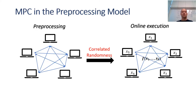In this work, we consider multiparty computation in the preprocessing model. In this model, the execution is divided into two phases: an offline phase, also known as the preprocessing phase, and an online phase. The goal of the offline phase is to produce correlated randomness, and it can be executed even before the inputs are known. In the online execution, the parties use the correlated randomness to compute the desired functionality over their private inputs.